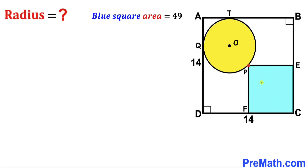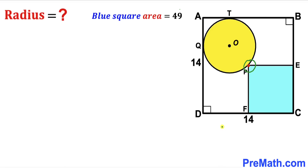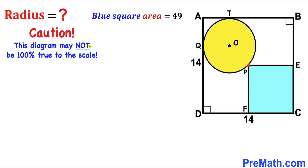Welcome to Pre-Math. In this video we have a blue square and a yellow circle fully inscribed in a square ABCD, such that the area of the blue square is 49 cm² and the side length of square ABCD is 14. Point P is the center of square ABCD. Our task is to calculate the radius of the yellow circle. Please give a thumbs up and subscribe, and keep in mind this figure may not be 100% true to scale.